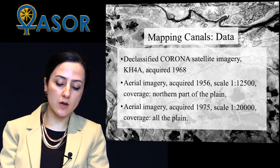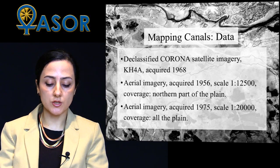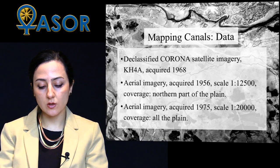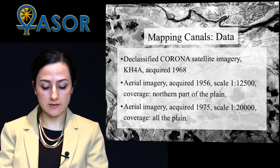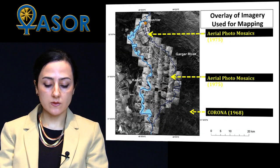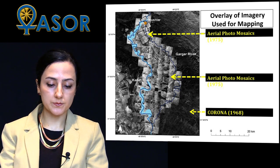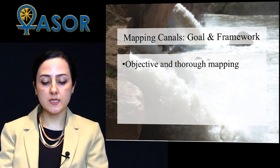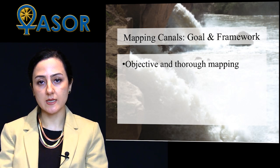Since the 1960s, the Mianab Plain has been subject to several large-scale agriculture and irrigation projects and the archaeological landscape has been dramatically altered. Besides the declassified Corona imagery, this research relies on two datasets acquired prior to and at the onset of development plans, purchased from the Iran National Cartographic Center, digitized, and georeferenced. The goal of mapping was to step away from a Sassanian-Islamic paradigm, be as objective as possible, and map canal networks as completely as possible.